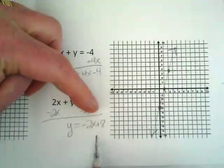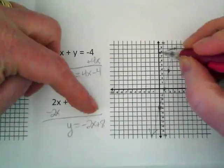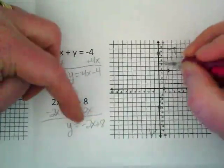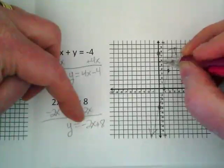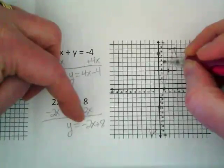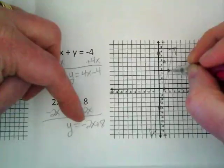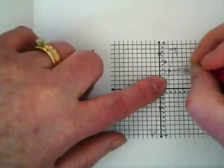And then my second line starts at positive 8. It's a negative line, so we're going to drop down 2 and run across 1. And I want to just keep doing that until I find a point.